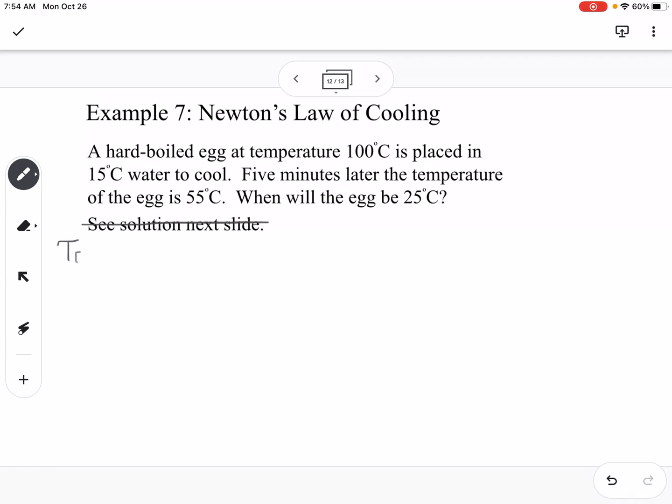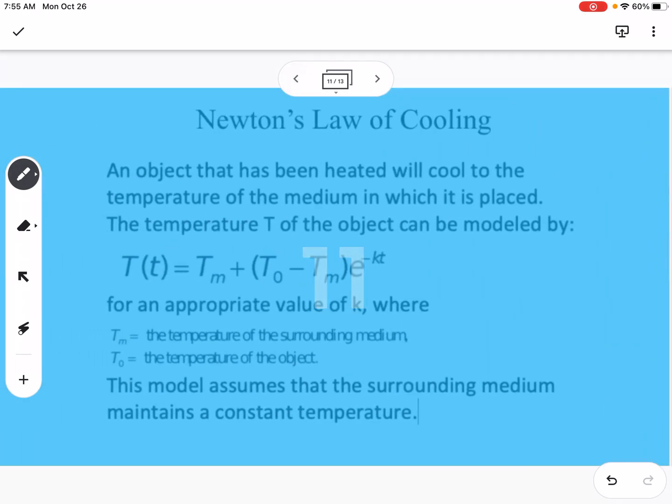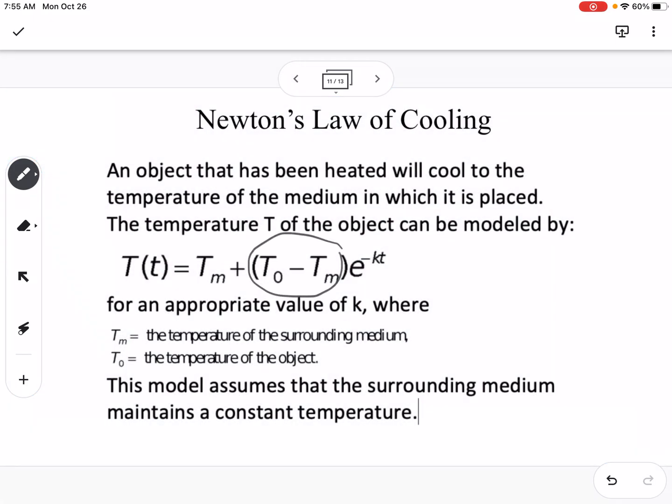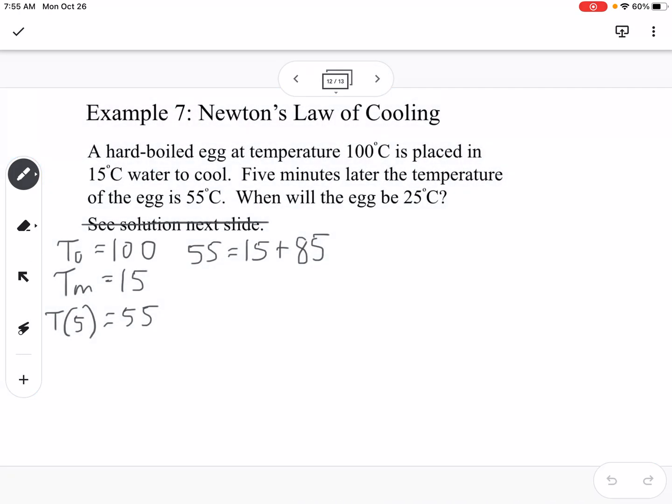We know that the temperature of the object is 100, and we know that the temperature of the medium is 15, and we know that T of 5 minutes is equal to 55. We're going to use this to solve and find out what K is. We're going to use that equation in the previous slide, so we're going to say 55 is equal to 15 plus 85. This right here is the temperature of the object minus the temperature of the medium, so 85 would be 100 minus 15, E to the negative 5K.